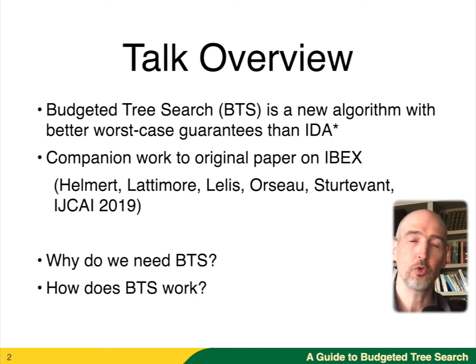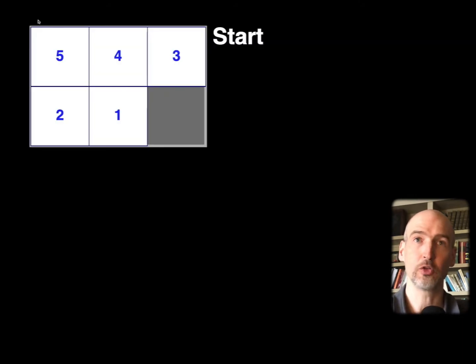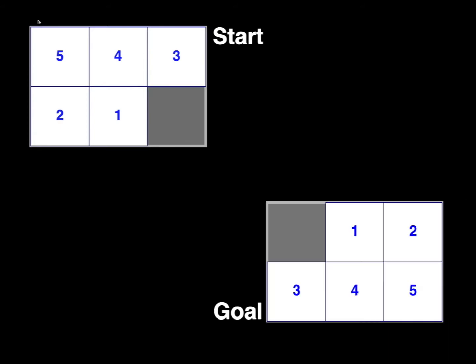So we're going to answer two questions today: why do we need budgeted tree search, and how does budgeted tree search work? In order to do that, we're going to look at an example state space, which is the three by two sliding tile puzzle. We use this throughout the talk today. The goal is that we have a start state, and we want to transform this into the goal state by taking actions one at a time. We have a heuristic that estimates the number of actions that we'll take to get there.